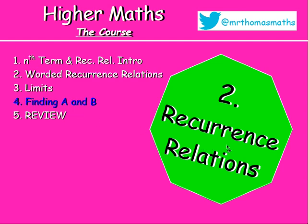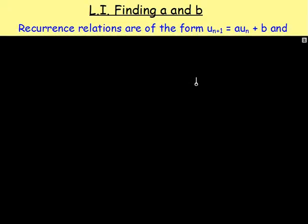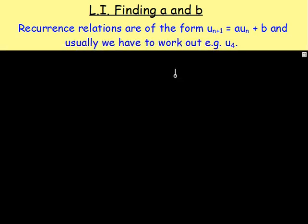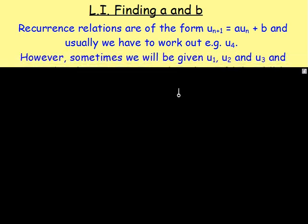But we're moving on to something which I'm calling finding A and B. What I mean by this is if you think back to recurrence relations, you know they are of the form U(n+1) equals A·U(n) plus B. And you can already work out certain terms of a recurrence relation. If you were given U1 you could work out U2, U3, U4 and so on.